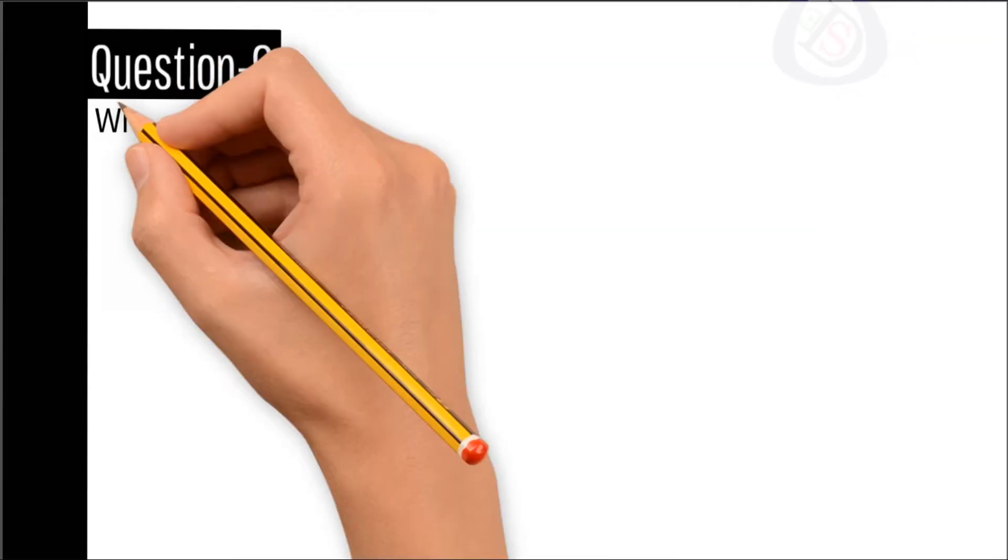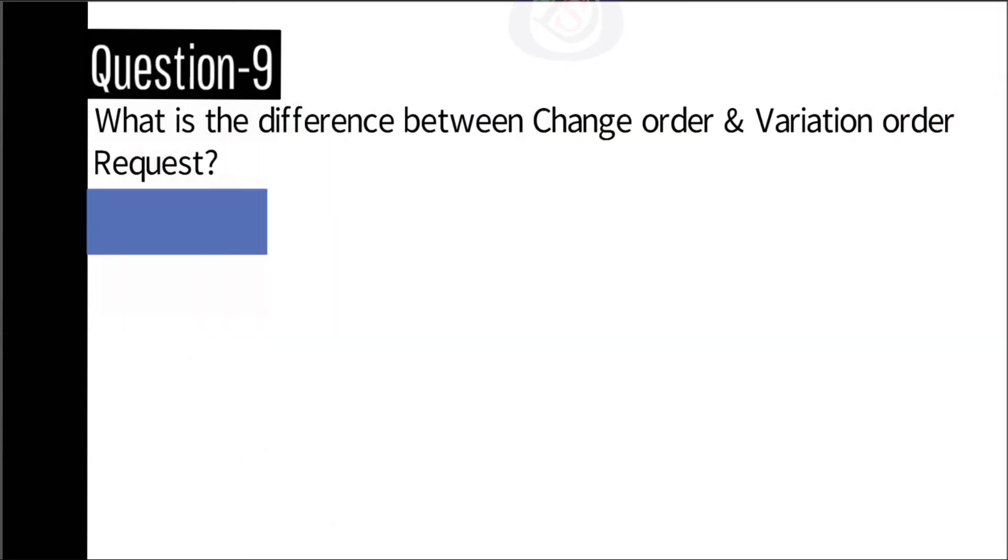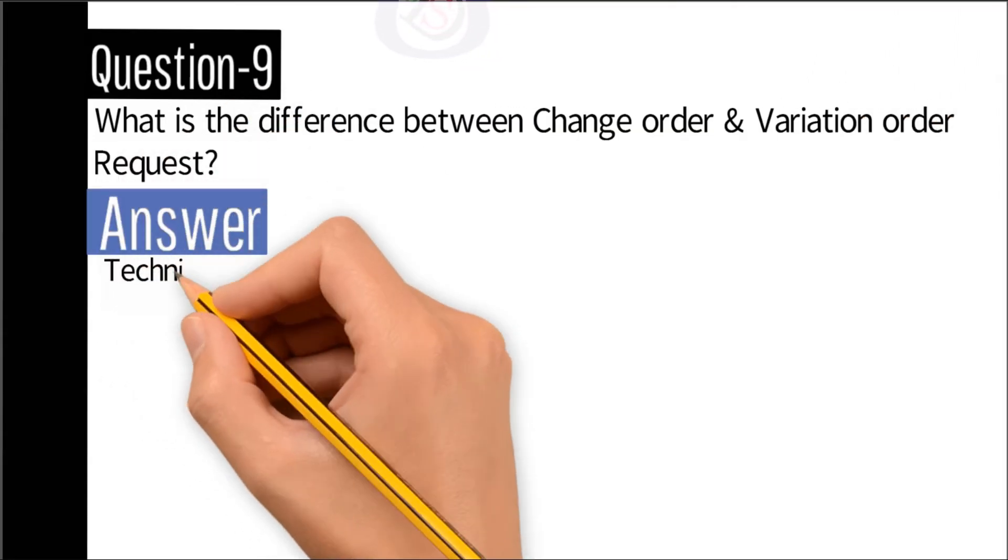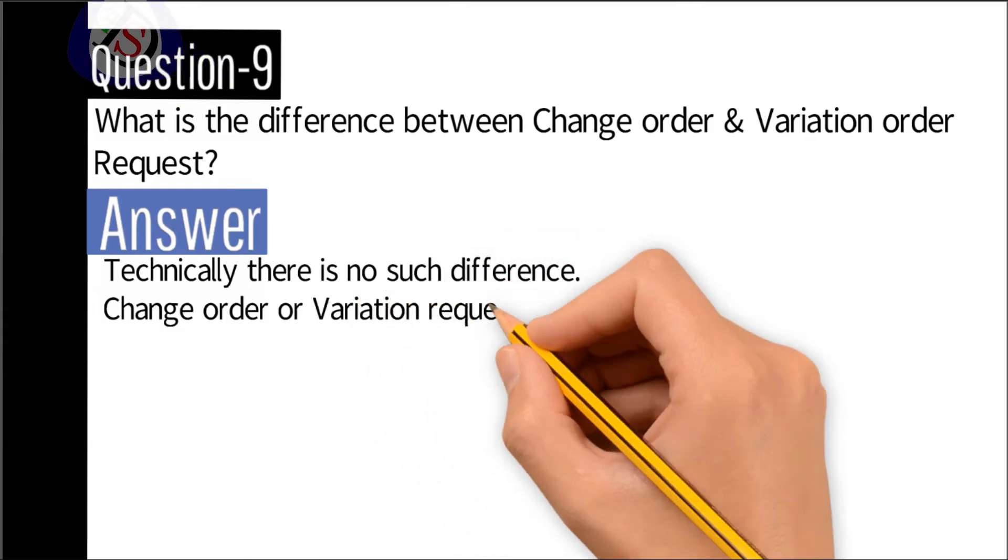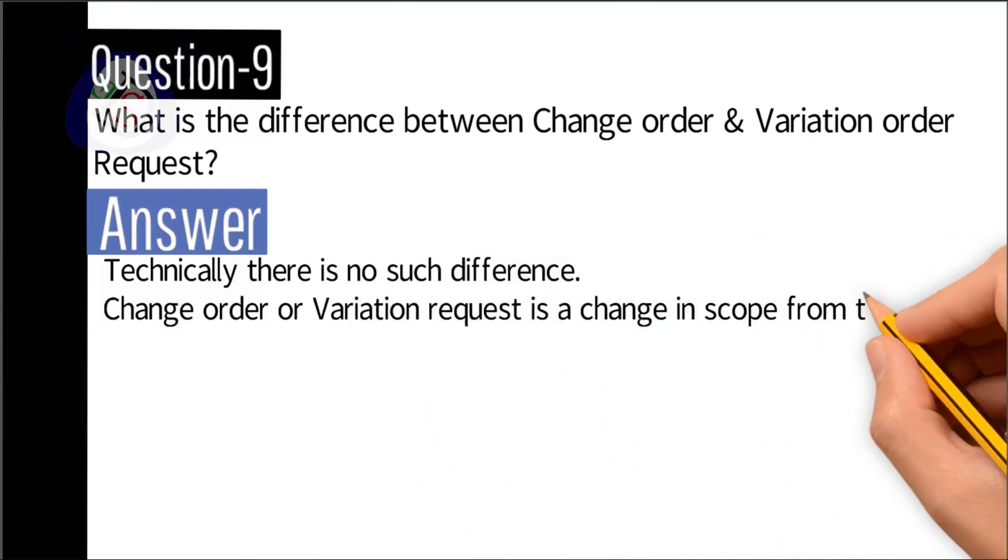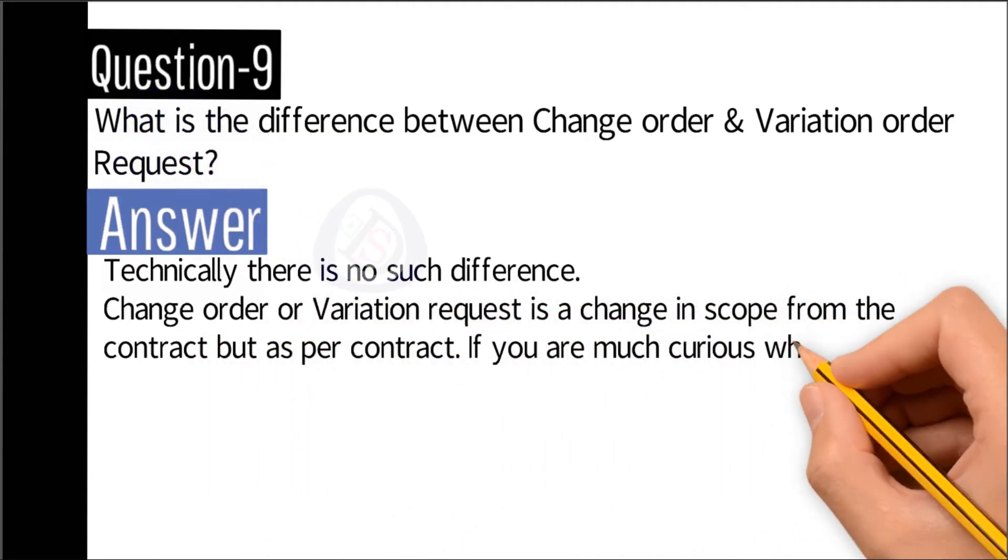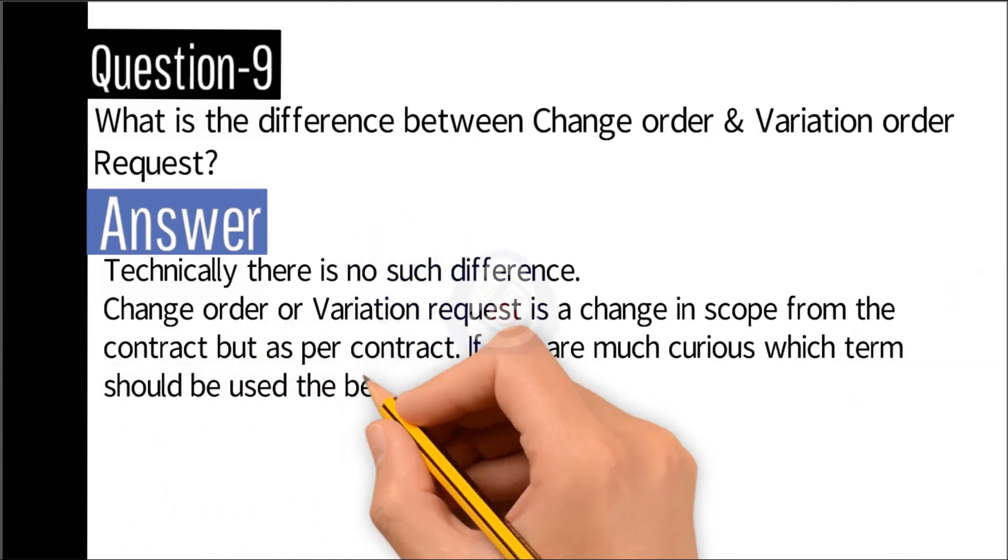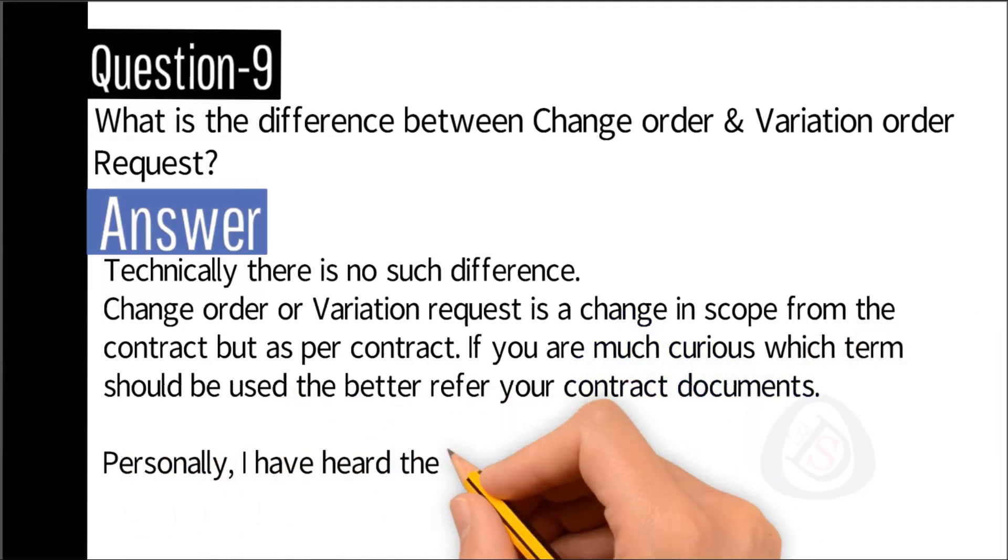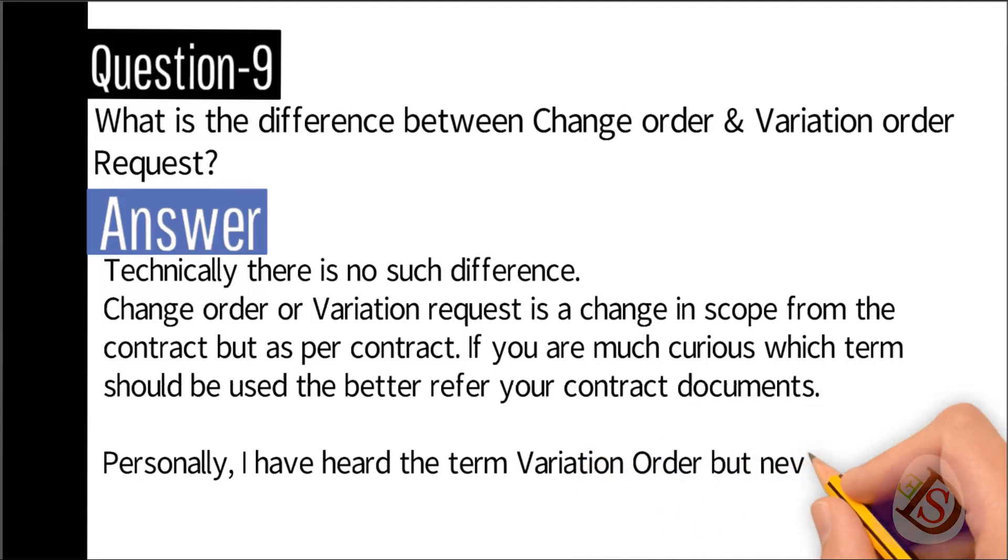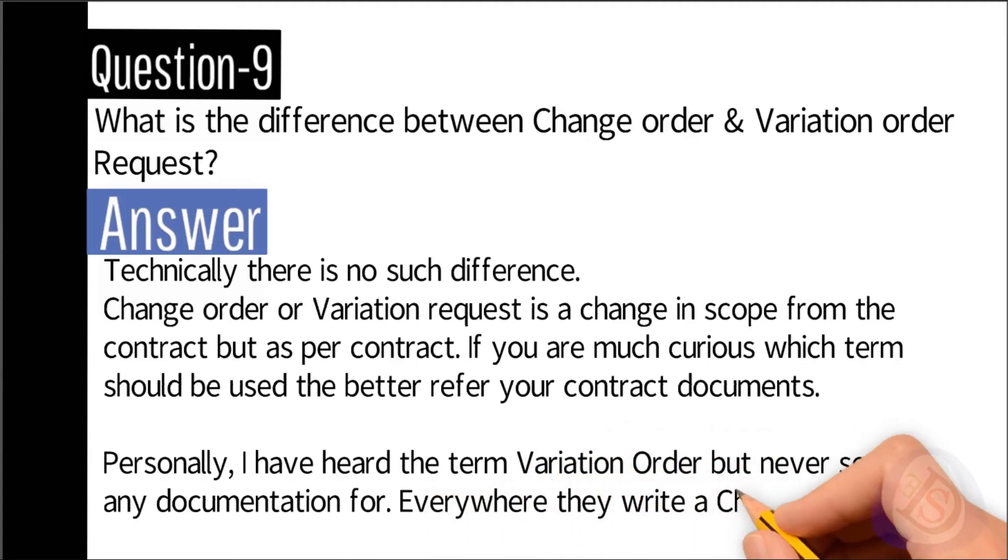Question number nine: What is the difference between change order and variation order request? Answer: Technically, there is no such difference. Change order or variation request is a change in scope from the contract but as per contract. If you are curious which term should be used, refer to your contract documents. Personally, I have heard the term variation order but never seen any documentation; everywhere they write change order request.